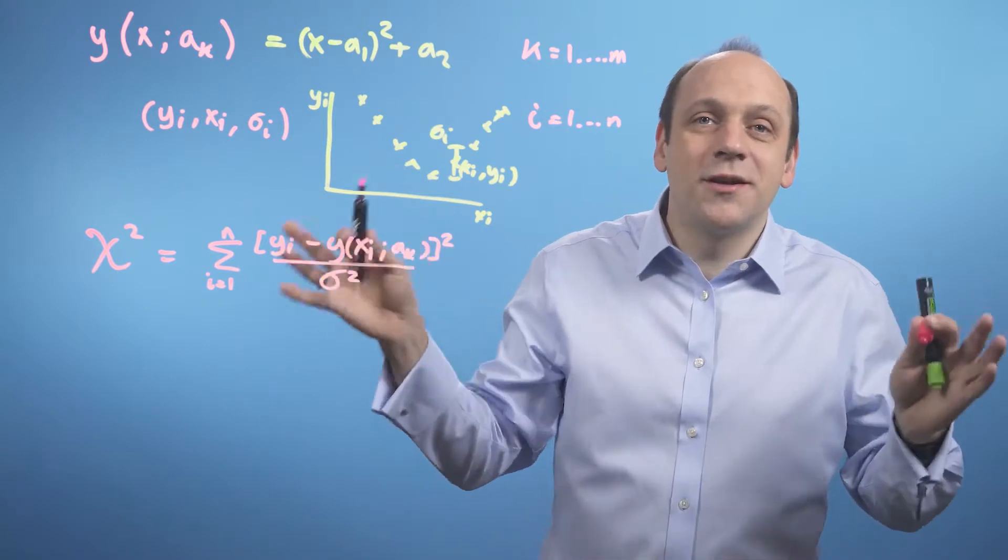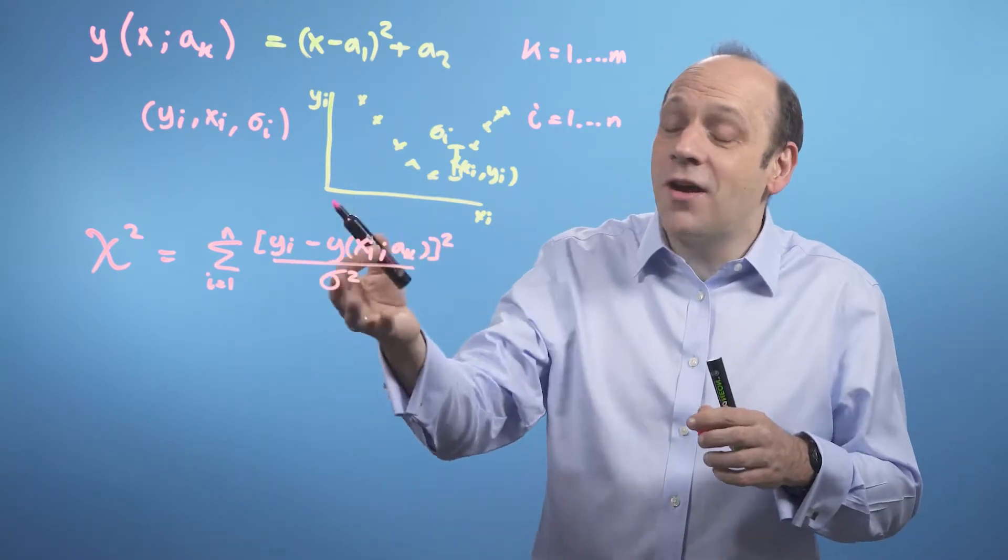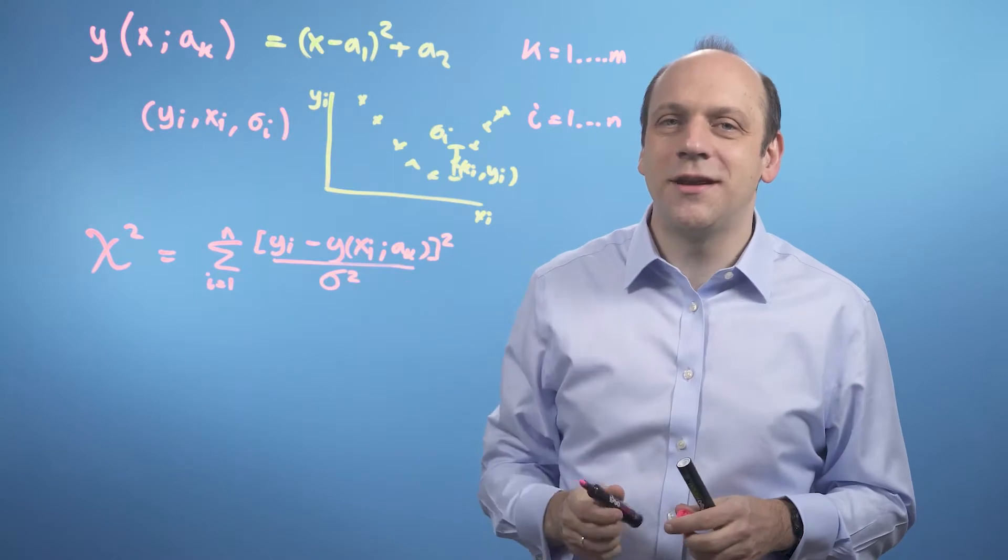If we don't know what the sigmas are, we could assign them all to be 1. This will just drop out. But if we have an idea of the measurement uncertainties, this gives us a way to include it.